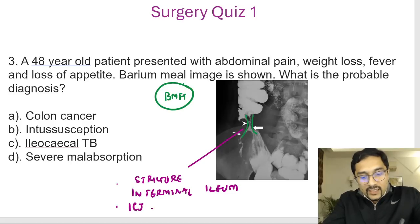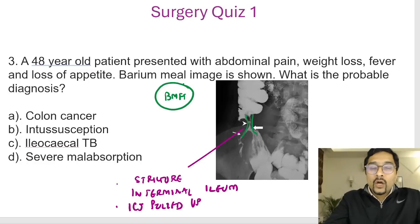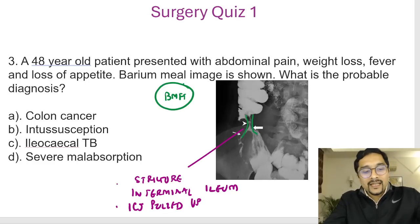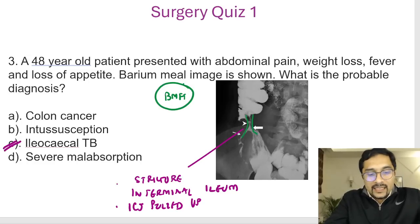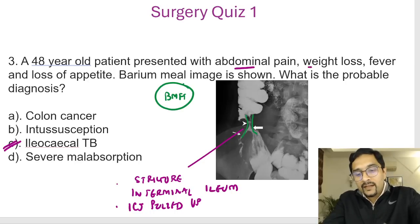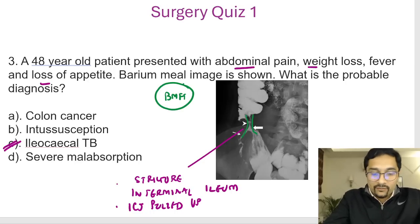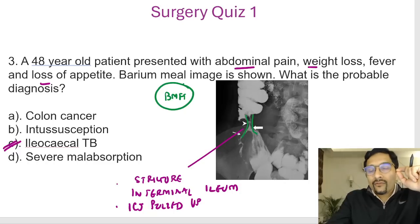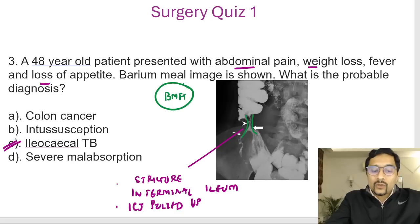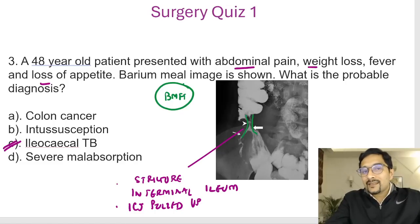The ileocecal junction is pulled up — this is typically known as the goose neck or swan neck deformity. This is seen in ileocecal tuberculosis, which presents with abdominal pain, weight loss, fever, and loss of appetite. Stricture of the terminal ileum can also be seen in Crohn's disease, but since that was not among the options, the answer here is ileocecal tuberculosis.